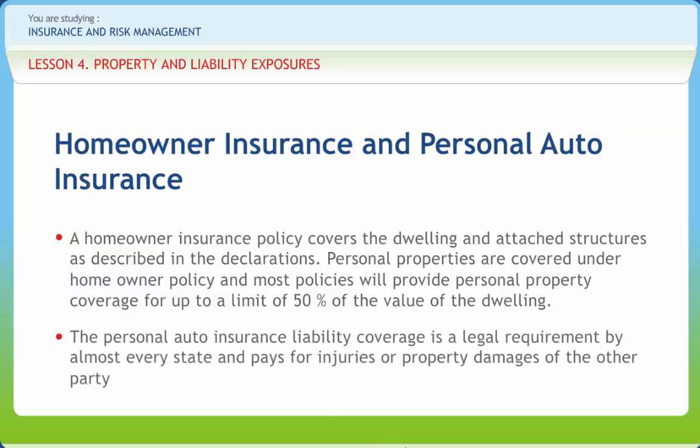The personal auto insurance liability coverage is a legal requirement by almost every state and pays for injuries or property damages of the other party. The liability insurance does not cover the vehicle or the passengers and driver of the party at fault but covers damages and medical expenses of the other parties in an accident. Collision coverage will pay for car damages caused by impact with other objects such as a pole, wall and tree, or rolling of the car. A greater coverage on owned car is available through other than collision coverage, which is referred to as comprehensive coverage. Because of the significance of home and personal auto vehicles in people's lives, both policies provide opportunities to purchase greater coverage far and beyond the standard policies.